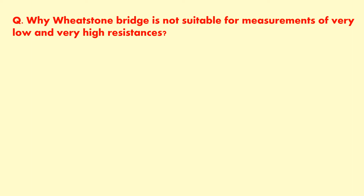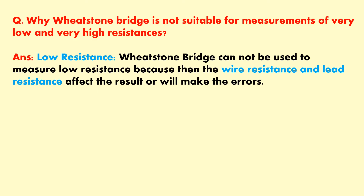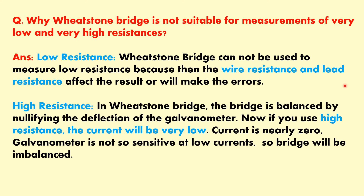Why is Wheatstone bridge not suitable for measurement of very low and very high resistances? This is due to errors in measurements. For very low resistances, the wire resistance and contact resistances affect the measurement and introduce errors. For very high resistances, the bridge is balanced by nullifying the galvanometer deflection, but very high resistance means very low current in the circuit, and the galvanometer is not sensitive enough at low current, so the bridge will be imbalanced and errors arise.